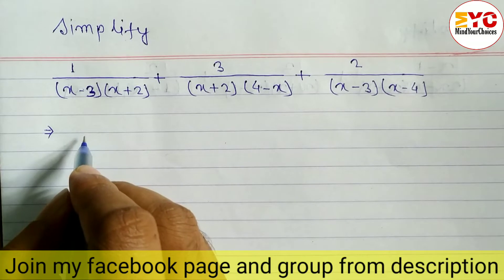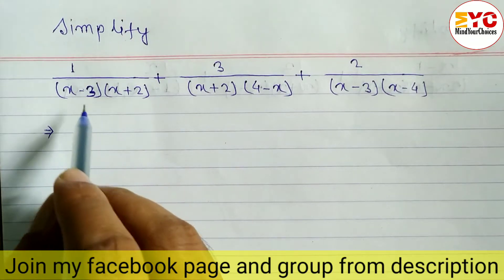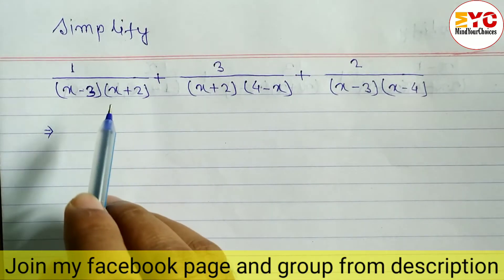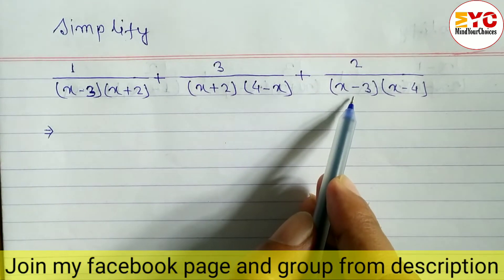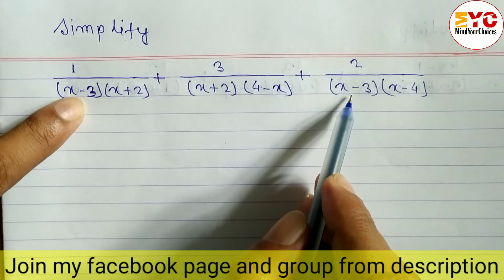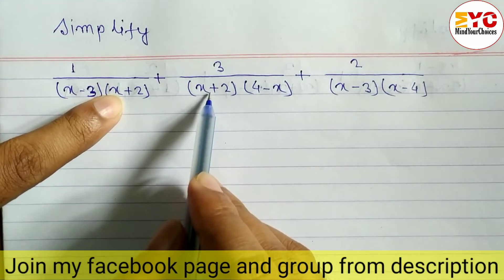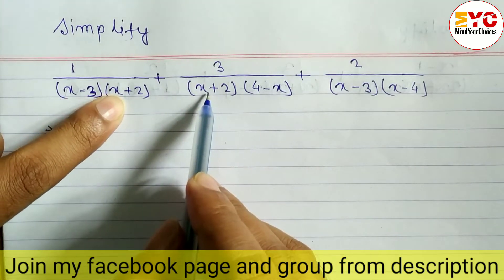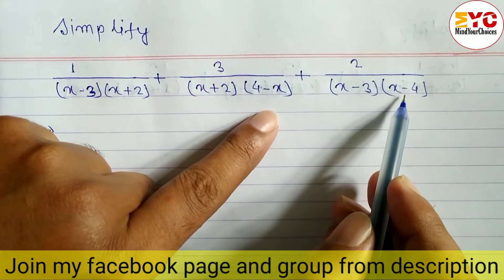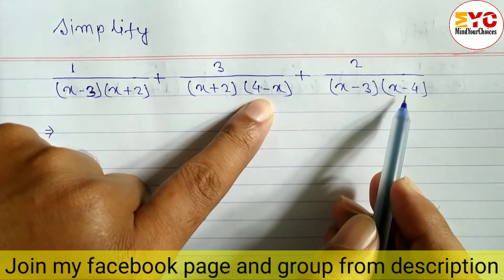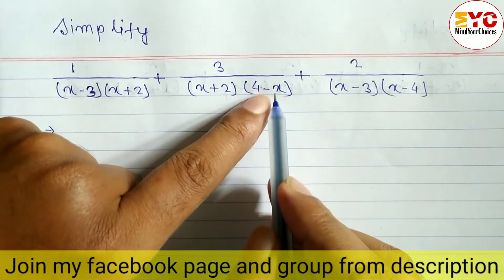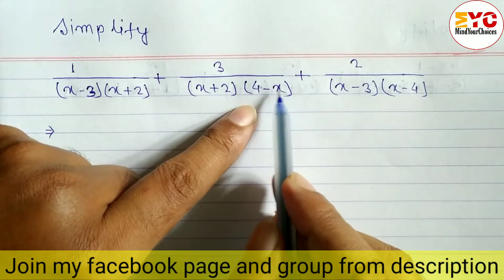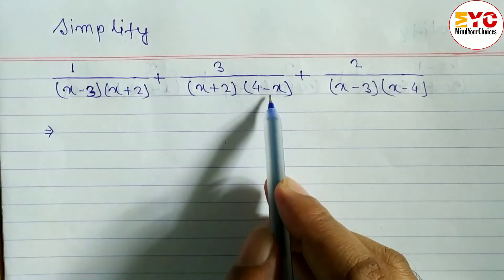First of all we have to take LCM, but before taking LCM we have to look at the factors — either they are same or not. You can see here x minus 3 appears in both. Here is x plus 2 and another x plus 2 is also here — those two are same. Here is x minus 4 but here is 4 minus x, so we can make it same.